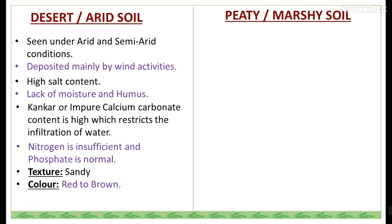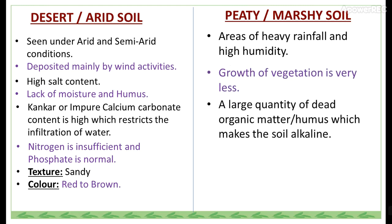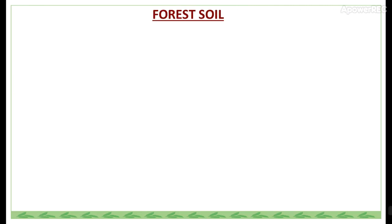Peaty or marshy soil is found in areas of heavy rainfall and high humidity. Growth of vegetation is very less. A large quantity of dead organic matter and humus makes the soil alkaline. It is heavy soil and black in color.